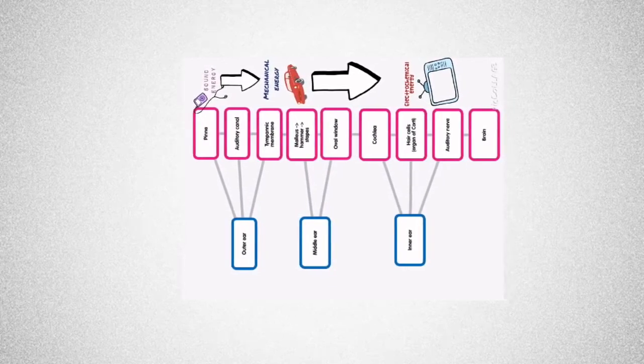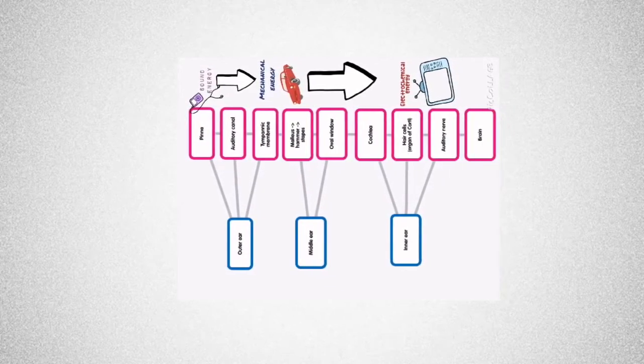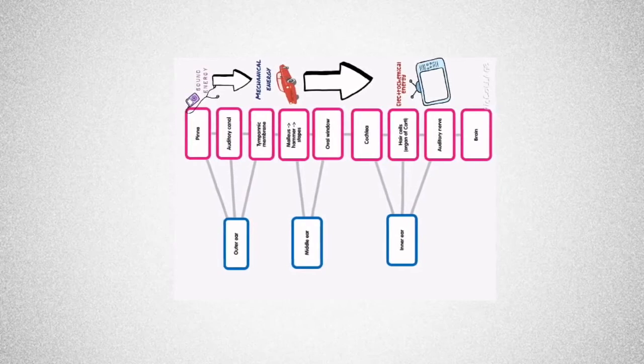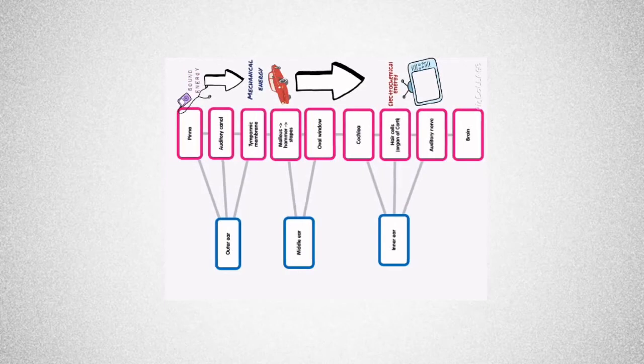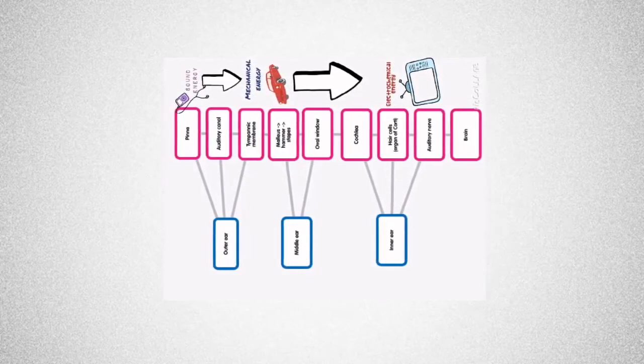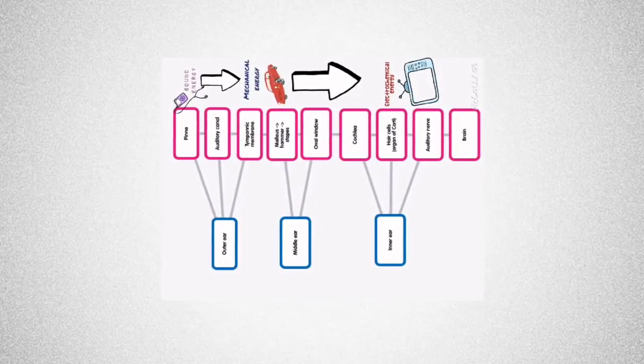Sound energy is converted into mechanical energy, which was also known as kinetic energy, as the tympanic membrane begins to vibrate. This mechanical energy is then transmitted through the three bones of the ear ossicles to the oval window.